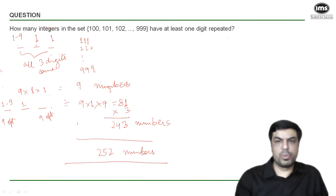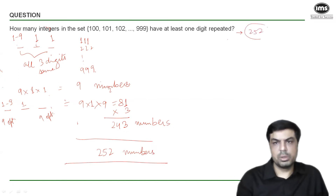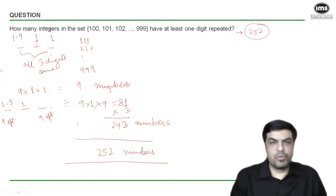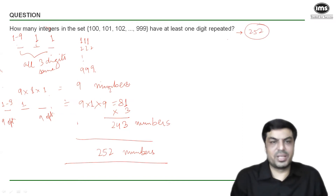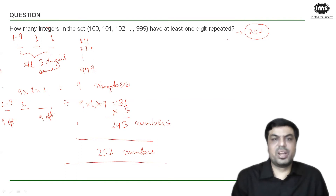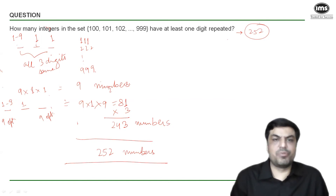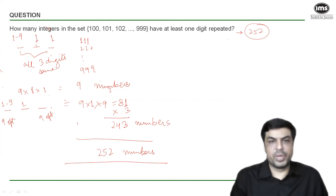So the answer is 252. This is one way of solving the question by listing cases. It was manageable here for three-digit numbers, but with four- or five-digit numbers it becomes more time-consuming.